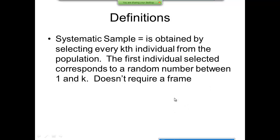Now, there's a systematic sample. This is obtained by selecting every kth individual from the population. The first individual selected corresponds to a random number between 1 and k. And this doesn't require a frame. Sometimes this doesn't work very well, though. You almost have to know how many you're going to be dealing with before you begin this.